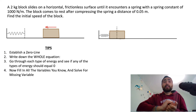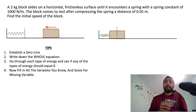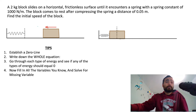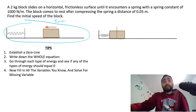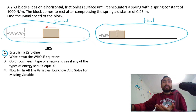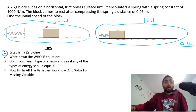A two kilogram block slides on a horizontal frictionless surface until it encounters a spring with a spring constant of 1000 newtons per meter. The block comes to rest after compressing the spring a distance of 0.05 meters. Find the initial speed of the block. When it's moving towards the spring, that's the initial state; when it compresses the spring, that's the final. Step one: establish a zero line. It seems silly since it's already on the ground, but just draw it on the ground — this is the zero line. Now write down the whole equation.